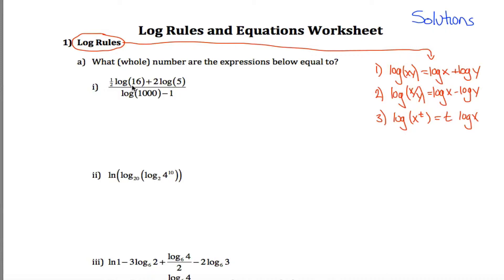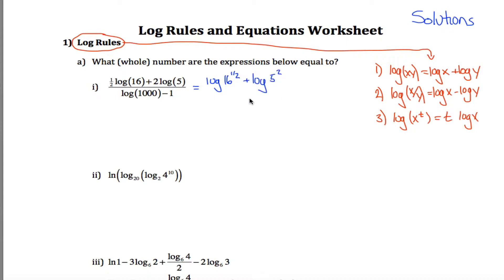So this first one here, you might think it's an application of the first log rule, and eventually it will be, because I have the log of something plus the log of something else. But because of this two and this one half, I can't directly apply that first log rule. I have to get rid of this two and this one half by applying the third log rule, which lets me take an exponent and bring it down in front. So I can say this is equal to the log of 16 to the one half power plus the log of 5 to the second power.